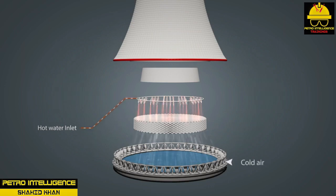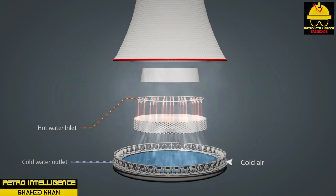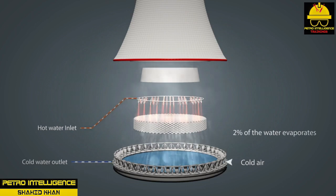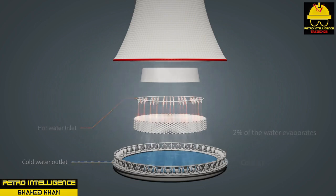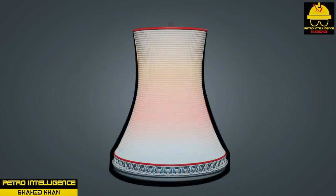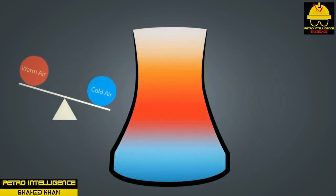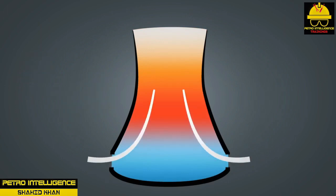When water changes to vapor, the vapor takes heat energy with it, leaving behind cooler liquid. Evaporation, which accounts for 80 to 90 percent of the heat loss, is the most critical factor in cooling tower efficiency. It is affected by relative humidity — that is, the amount of water in a given quantity of air at a given temperature — wind velocity, and temperature. Other factors affecting cooling tower efficiency are tower design, water contamination, and equipment problems.